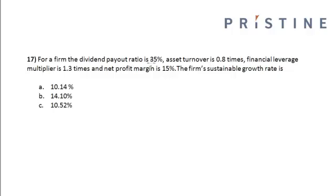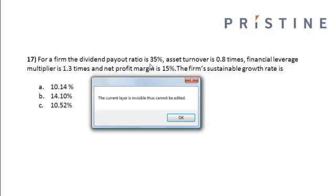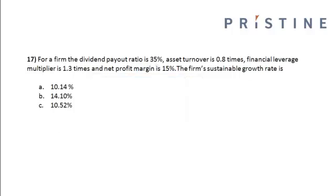For a firm, the dividend payout ratio is 35%, the asset turnover is 0.8 times, the financial leverage multiplier is 1.3 times, and the net profit margin is 15%. The firm's sustainable growth rate is to be determined.